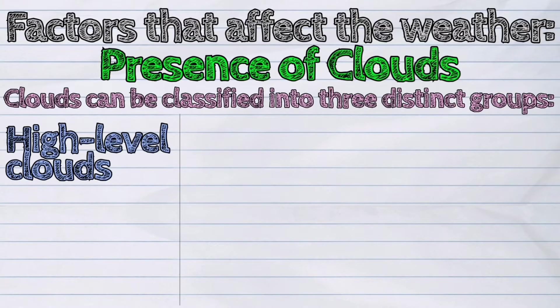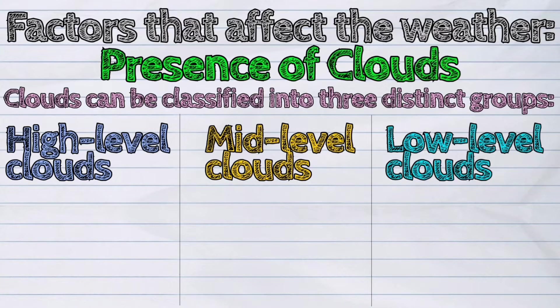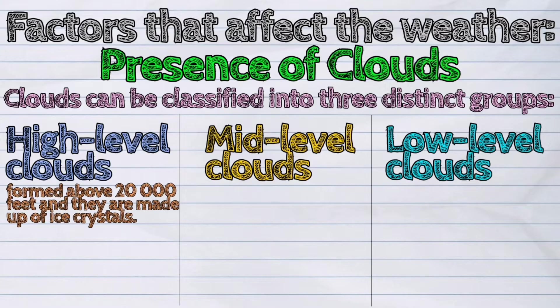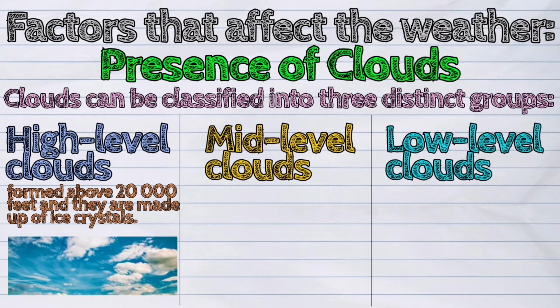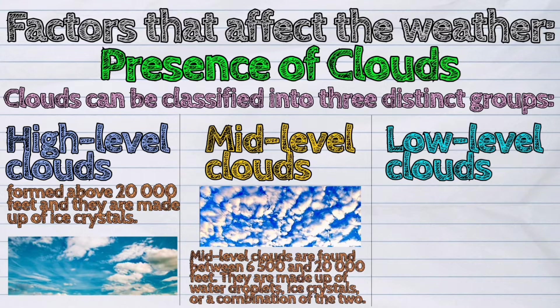The three groups are high-level clouds, mid-level clouds, and low-level clouds. High-level clouds are formed above 20,000 feet and they are made up of ice crystals. Mid-level clouds are found between 6,500 and 20,000 feet; they are made up of water droplets, ice crystals, or a combination of the two.